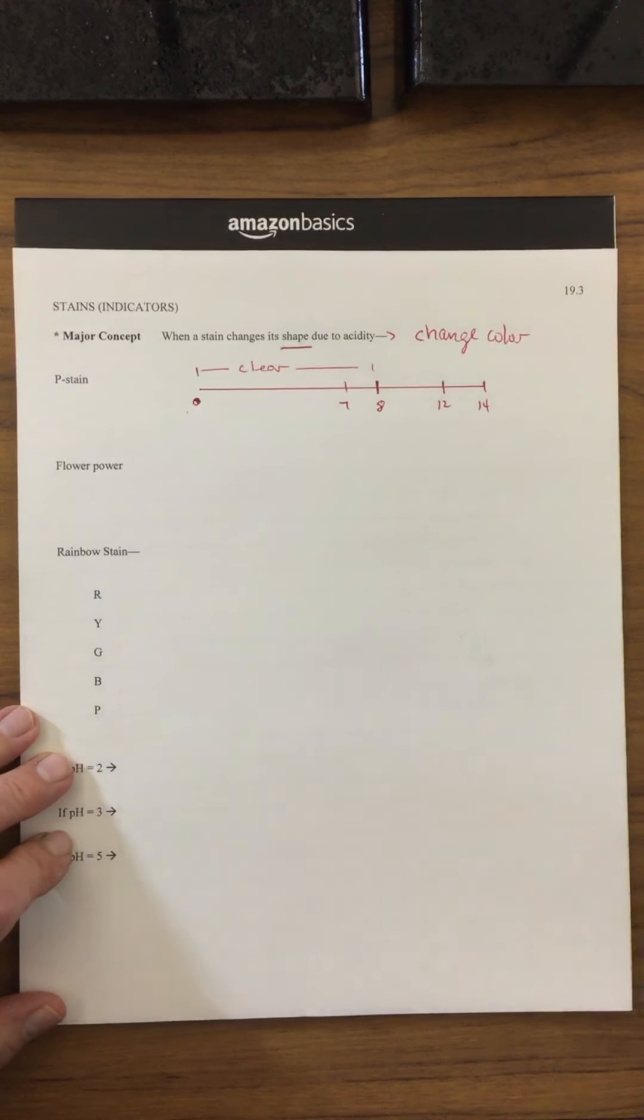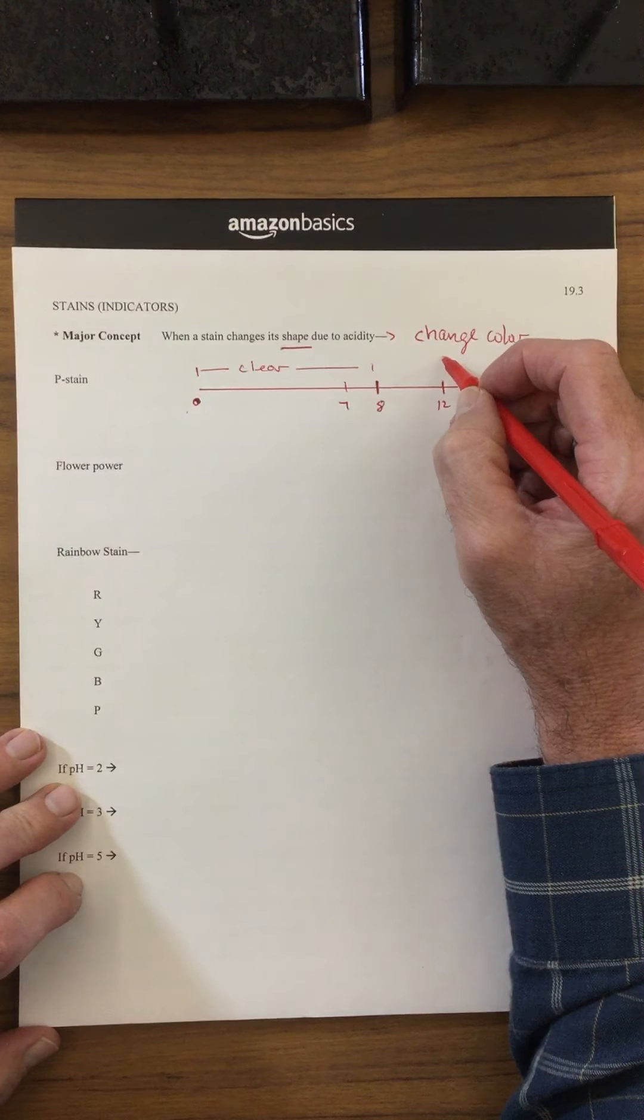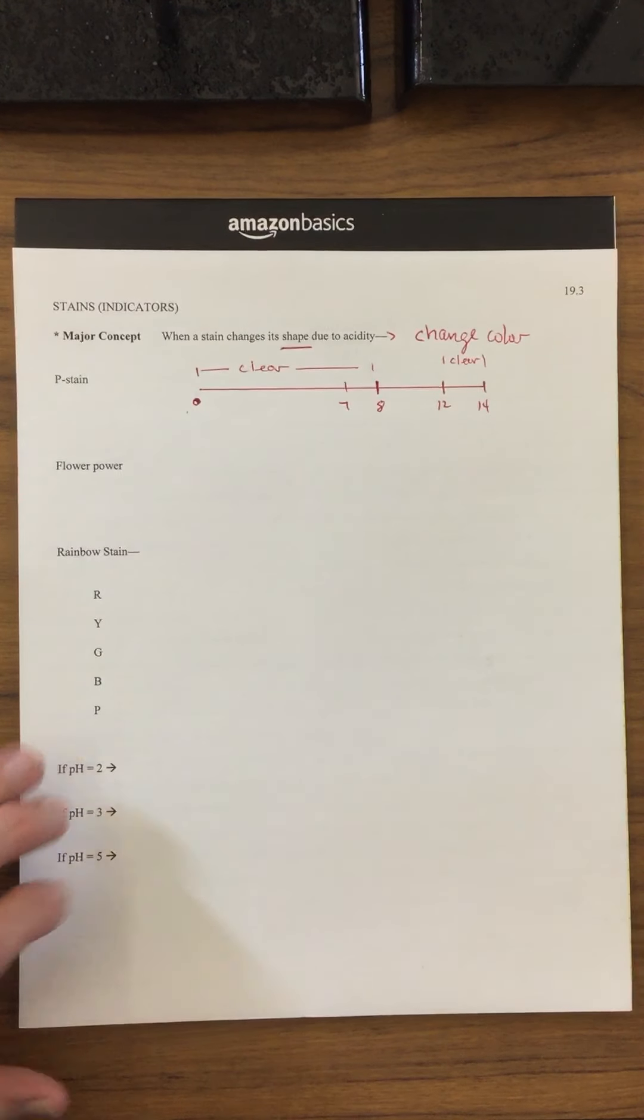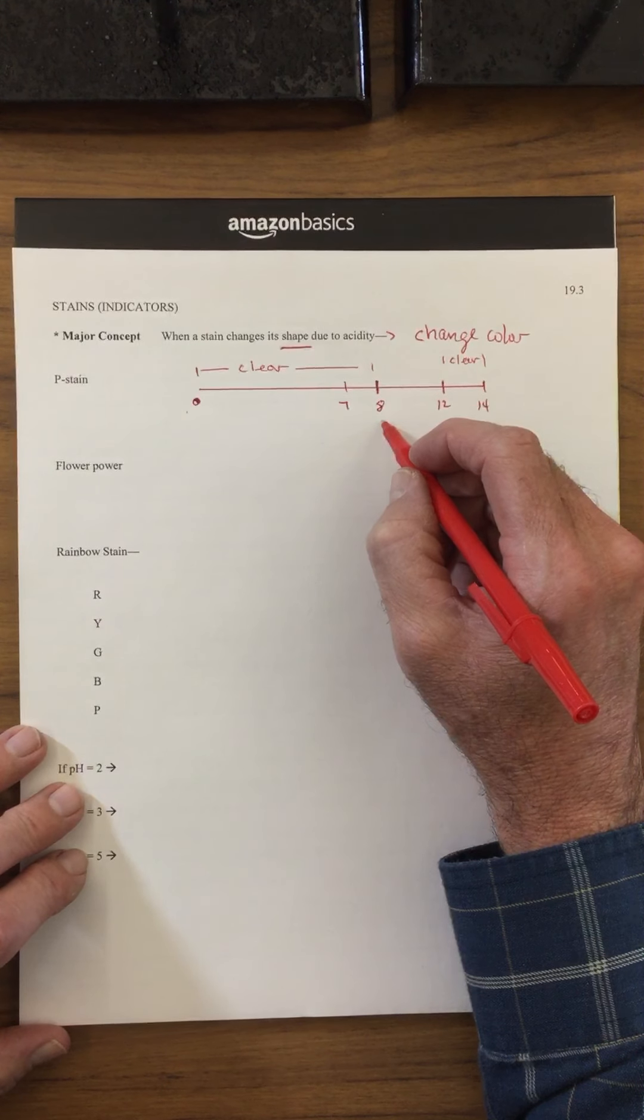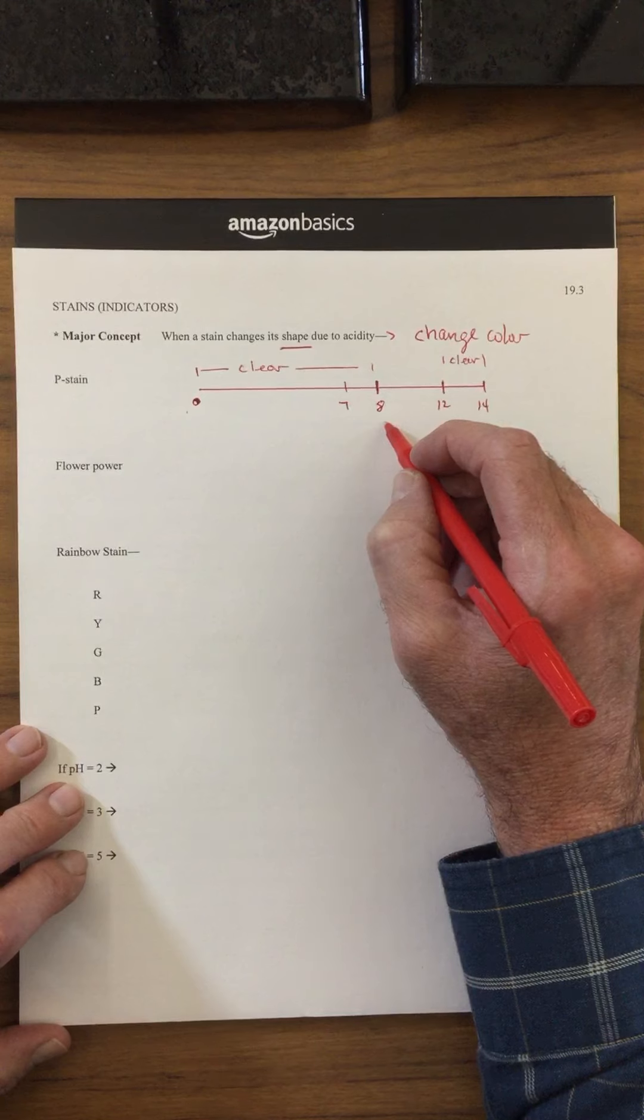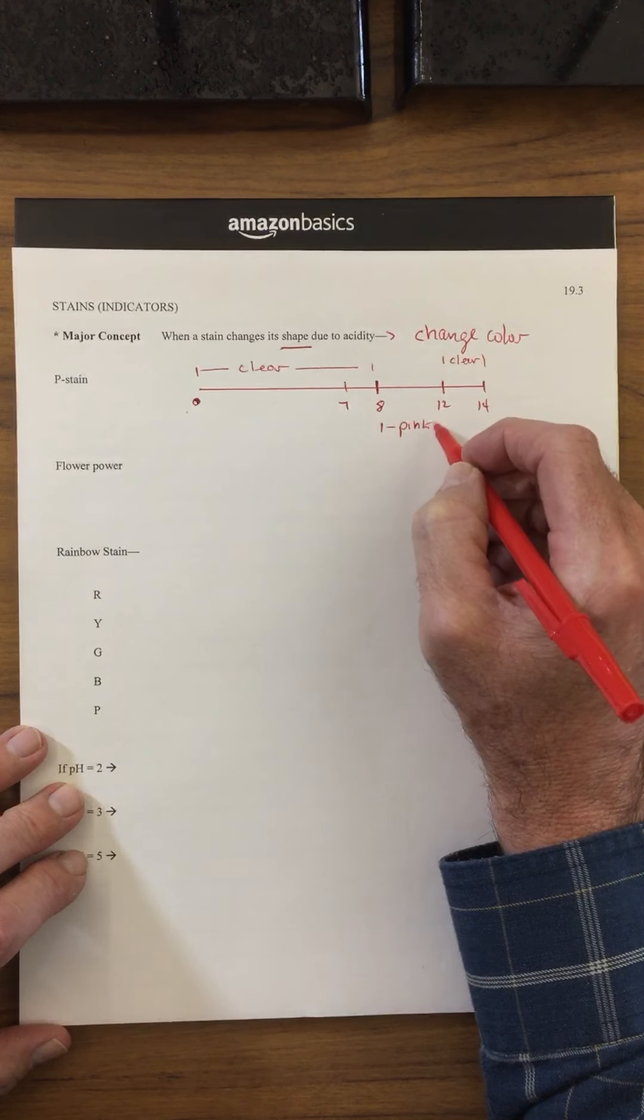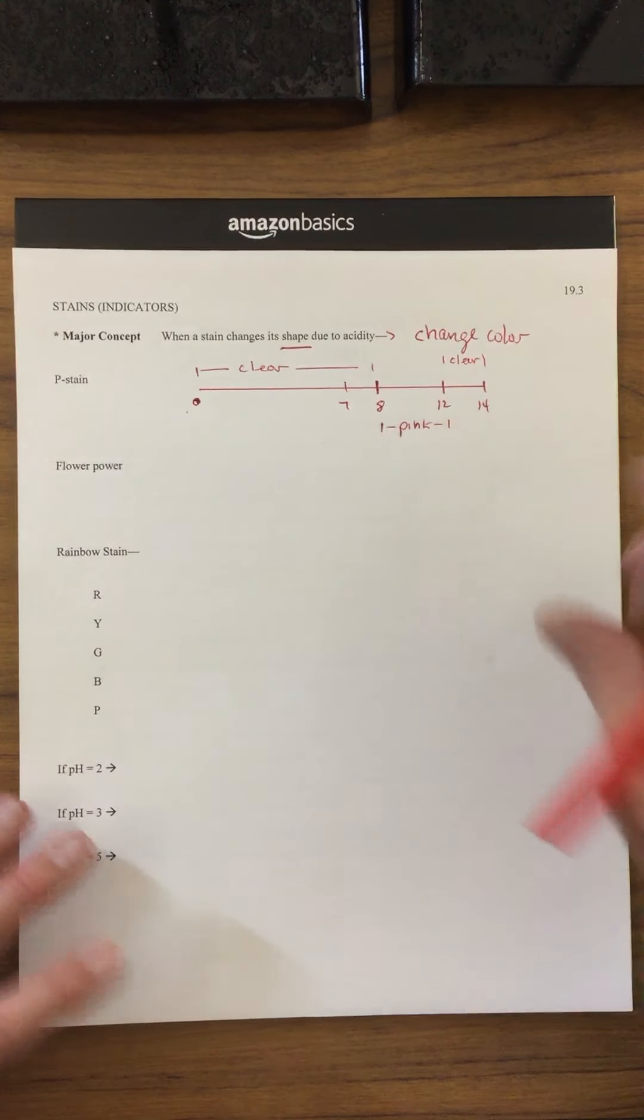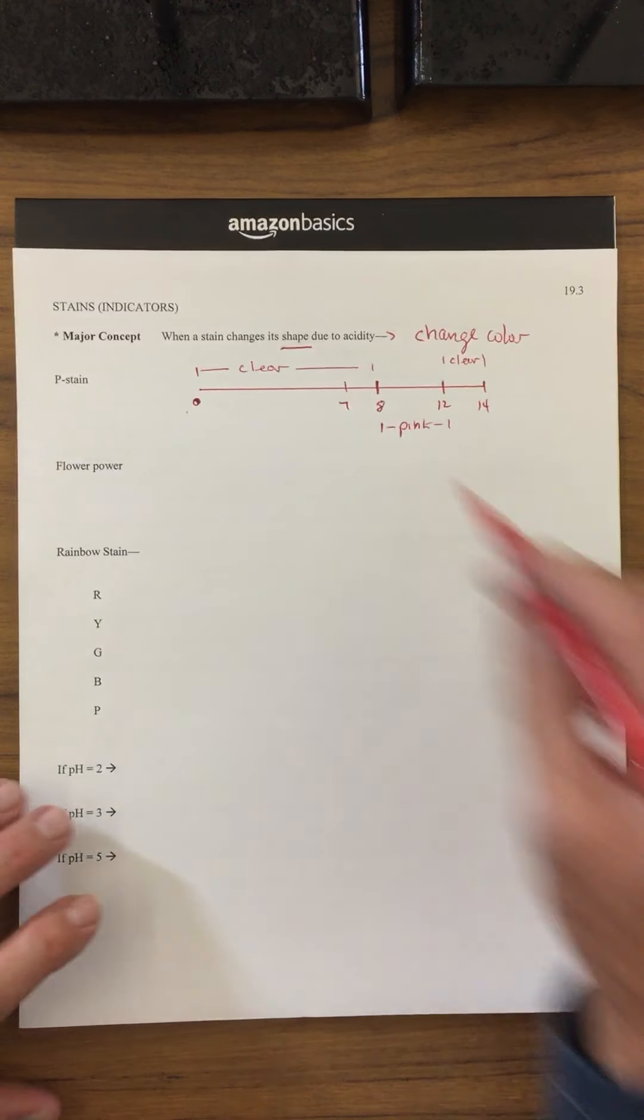If it's between 0 and 8, it's going to be clear. If it's greater than 12, this will also be clear as well. But it's when it's in the range of 8 and 12 that's when we are going to be seeing the color turn pink. So each stain has a particular range that it functions within, and its range is between 8 and 12.